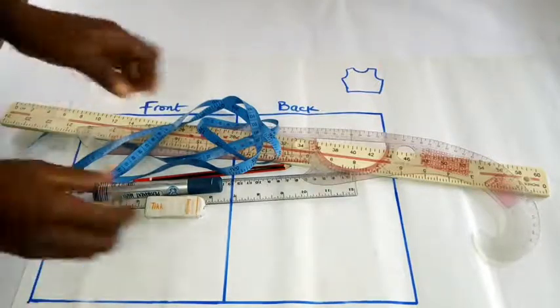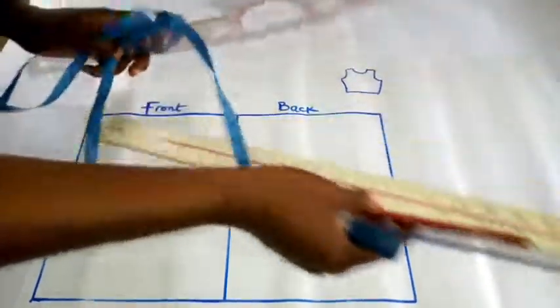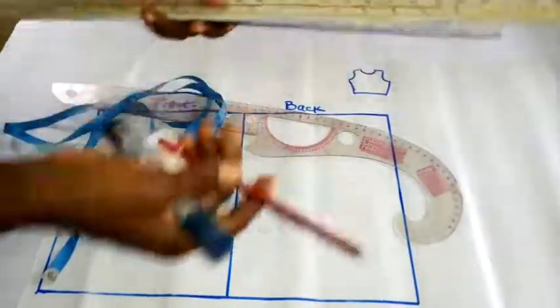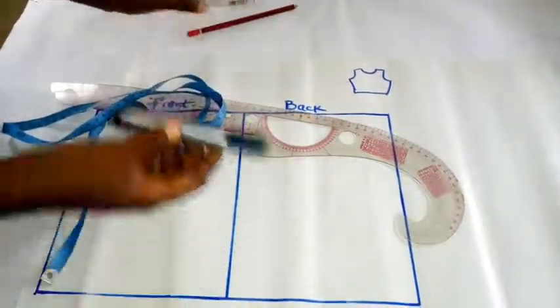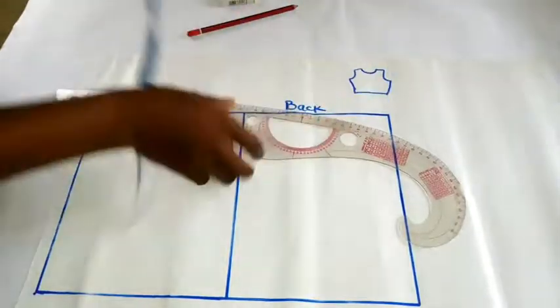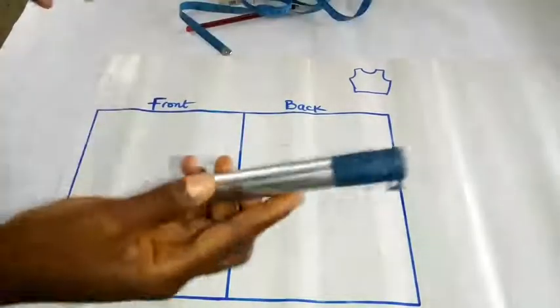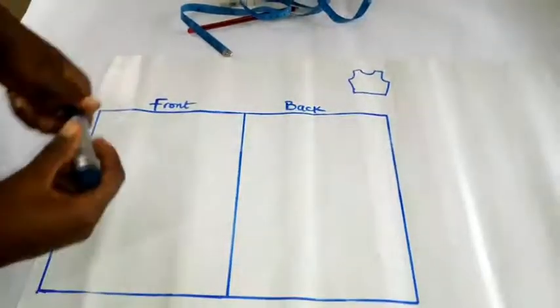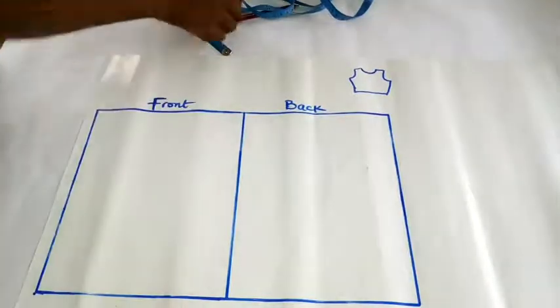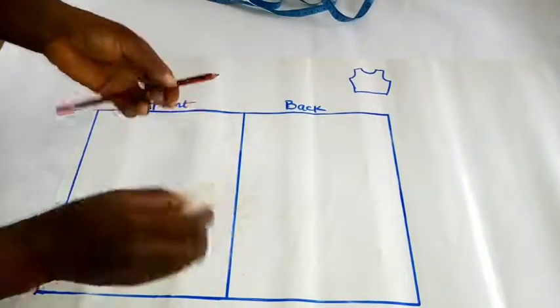These are the tools we will be needing for this tutorial: rulers or a pair of rulers, pencil and eraser, marker, tape measure, and cord. I'm going to be using the marker so that we can see the drafting clearly. Otherwise, it's always better to use your pencil and eraser so that whenever you make a mistake, you can easily clean.